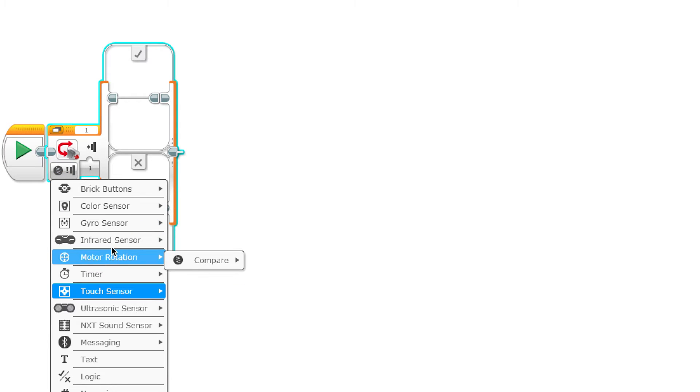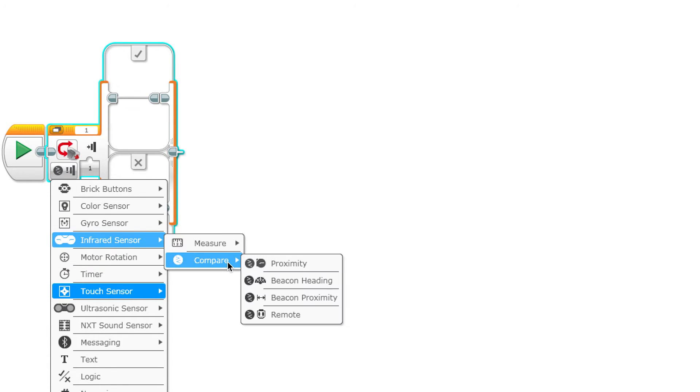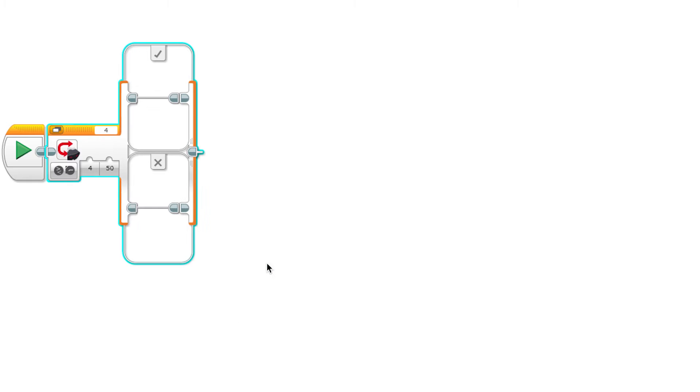We want it to make a decision, so we're going to use a switch. We want the robot to compare its proximity to an object.